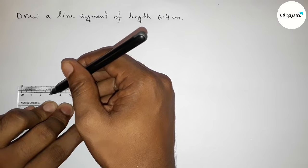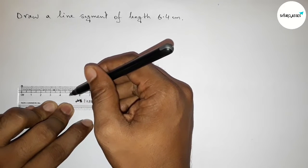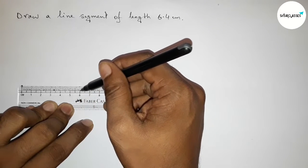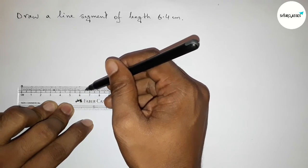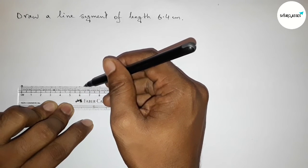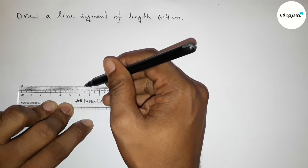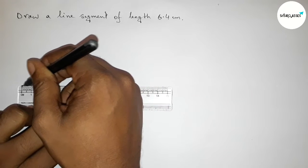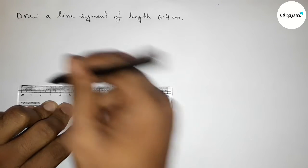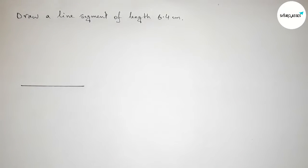Two centimeter, three centimeter, four centimeter, five centimeter, six centimeter, and this is 6.1, 6.2, 6.3, 6.4. So this is 6.4 centimeter length. Marking 6.4 centimeters, then joining this line.